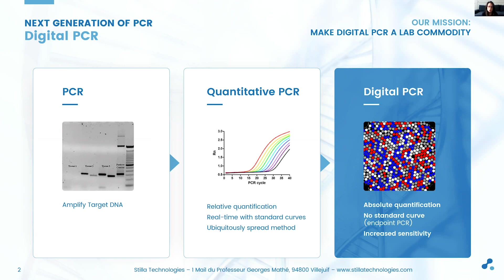By partitioning the PCR reaction mix, digital PCR enables an absolute measurement of target concentration, overcoming the limitations of qPCR and conferring increased sensitivity. We will see how in more detail.